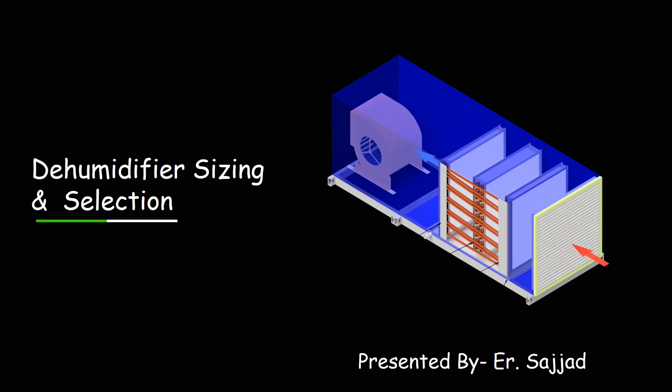Now, how does a dehumidifier work? A dehumidifier operates by drawing moist air into the unit, removing moisture, and releasing the drier air back into the room.